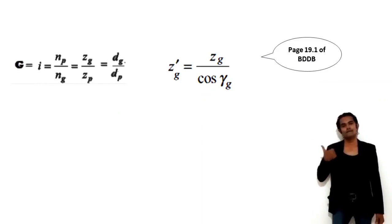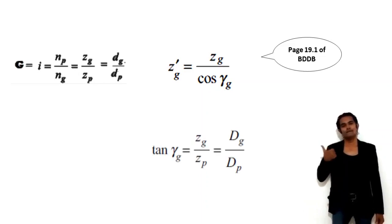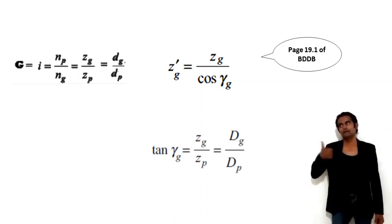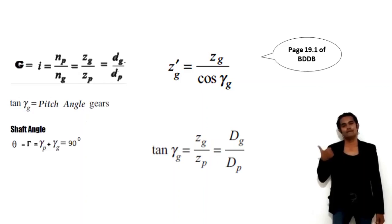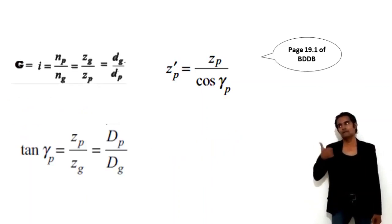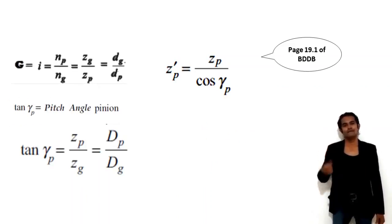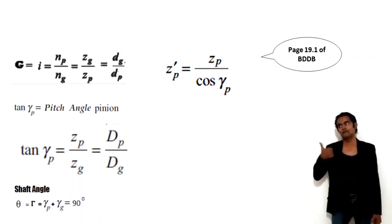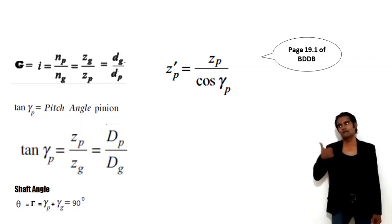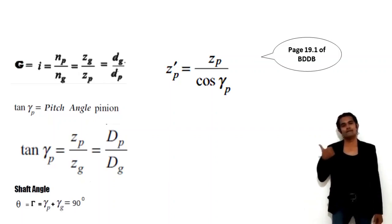You also have to calculate the virtual number of teeth: Z-dash-G = ZG upon cos(γG), where γG is the pitch angle. So tan(γG) = ZG upon ZP. Similarly, tan(γP) = ZP upon ZG, which is the pitch angle for the pinion. Remember, shaft angle θ = γP + γG = 90°, because the angle between the two shafts in bevel gears is 90 degrees.